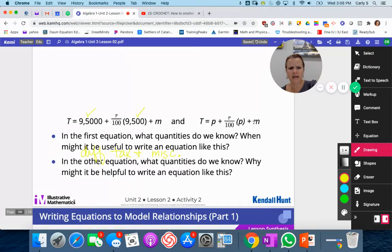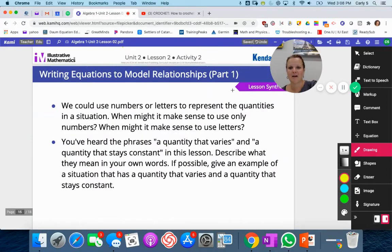In the other equation we don't know anything. If we're comparing a bunch of different cars, a bunch of everything, a bunch of different tax rates. There's our taxes, there's our purchase price, there's our miscellaneous fee and our total cost. All of the things are replaceable in that equation.